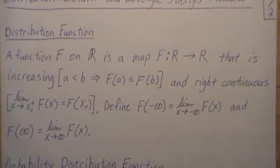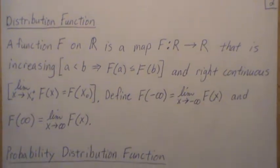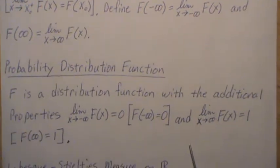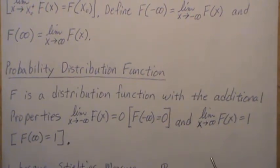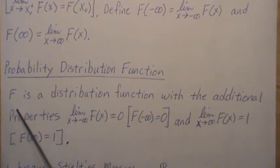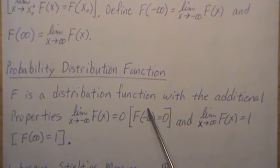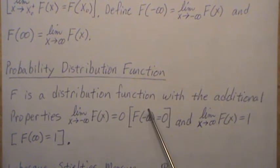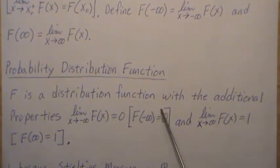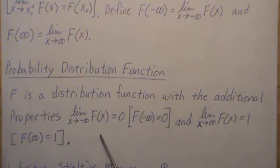In statistics, we often call a distribution function, it's really a probability distribution function. What we mean by that is F is a distribution function, so it's increasing and right continuous, but it has the additional properties that the limit of F(x) as x goes to minus infinity is zero.